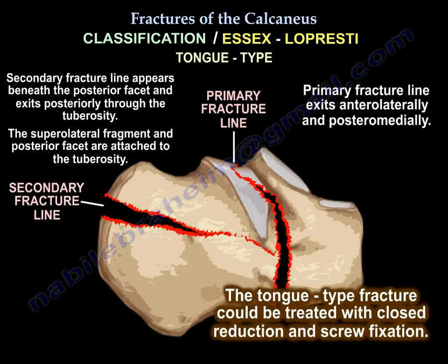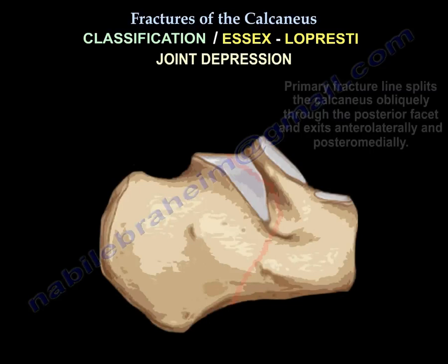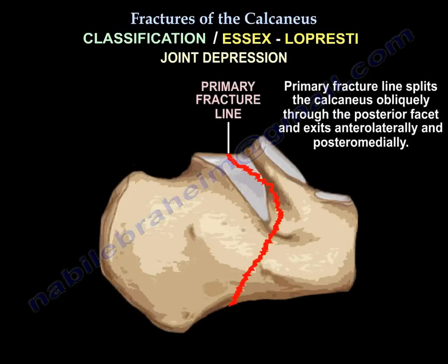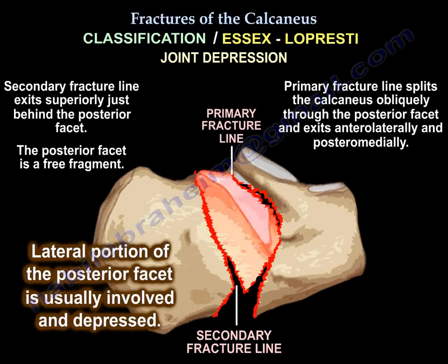The tongue-type fracture can be treated with closed reduction and screw fixation. In the joint depression type, the primary fracture line splits the calcaneus obliquely through the posterior facet and exits anterolaterally and posteromedially. The secondary fracture line exits superiorly just behind the posterior facet, making the posterior facet a free fragment — usually the lateral portion is involved and depressed.